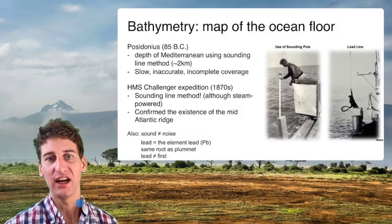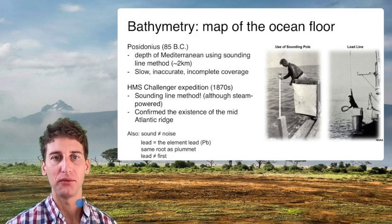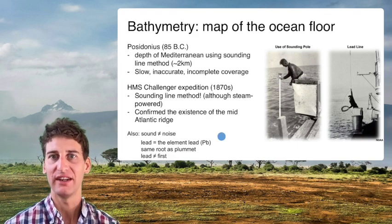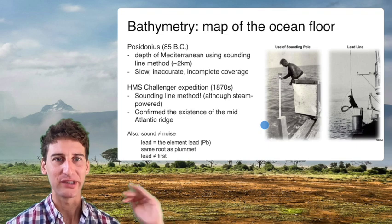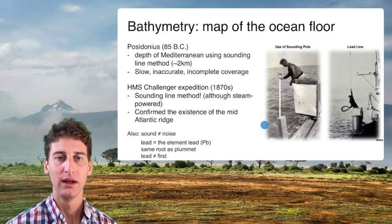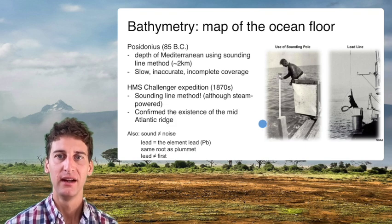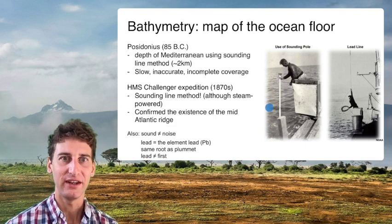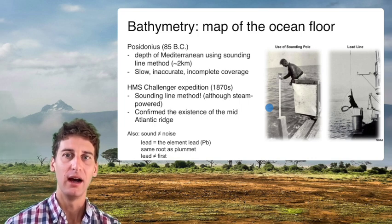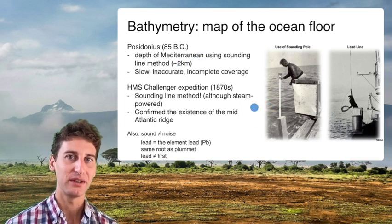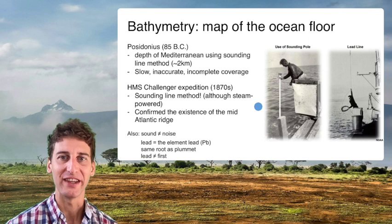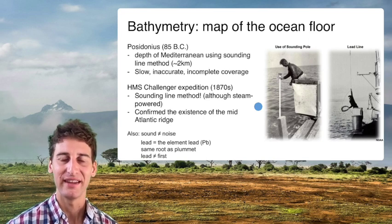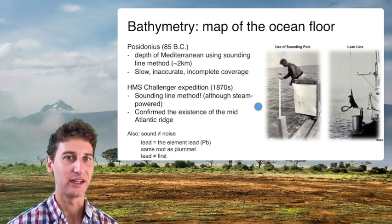One of the first technologies to measure the depth of a water column is what's called a sounding pole — just a big stick with markings so you know how much of it is below the waterline. This is pretty intuitive technology, but it only gets you maybe 20 to 30 feet, and then you're dealing with a really big stick and you're not able to go offshore in any real capacity.